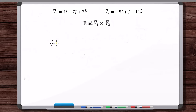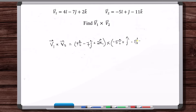What you do is write out the two vectors like you're going to multiply two polynomials — here's V1, then cross. We're actually going to distribute just like multiplying two polynomials: 4i-hat cross minus 5i-hat, plus 4i-hat cross positive 1j-hat, plus 4i-hat cross minus 11k-hat, plus minus 7j-hat cross minus 5i-hat, and so on. You don't have to memorize anything — just write out the vectors and distribute.